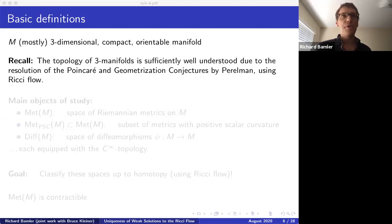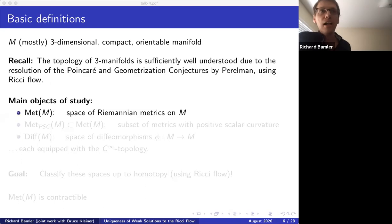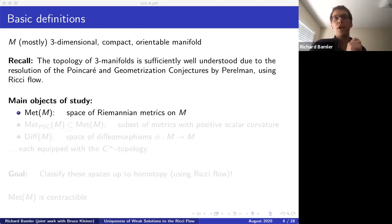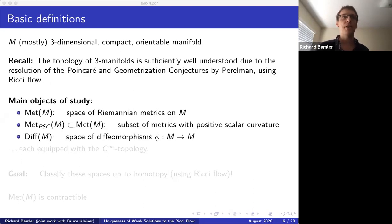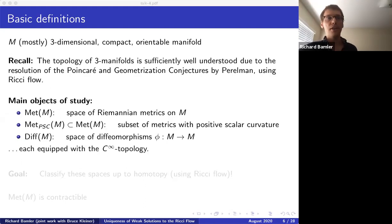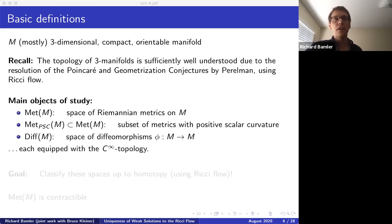There are three main objects I'll be considering. First, the space of all Riemannian metrics on a given manifold, denoted Met(M), where every point corresponds to one Riemannian metric. Second, the subset of all metrics with positive scalar curvature. Third, the diffeomorphism group of the manifold — the space of all smooth maps from M to M with smooth inverses. I'll equip these spaces with the C-infinity topology, where convergence is equivalent to convergence with respect to every C^k norm.